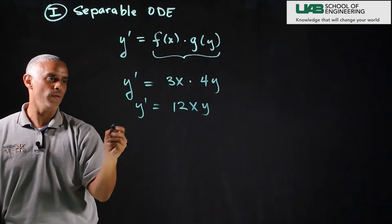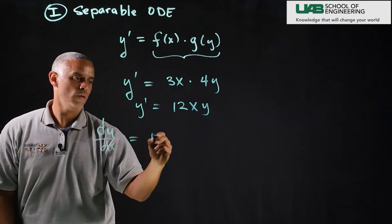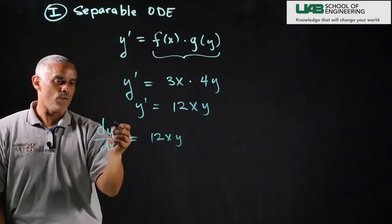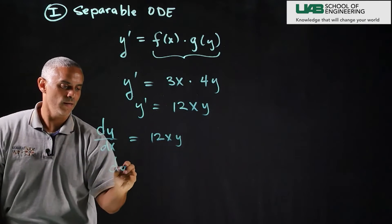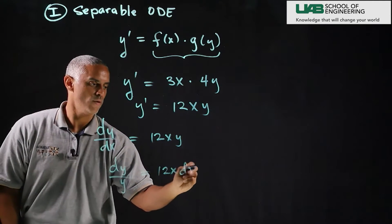First write our y prime in Leibniz form so I write dy by dx equals 12xy then I separate. So I want to bring all the y's to the left-hand side. I get dy over y equals 12x dx.